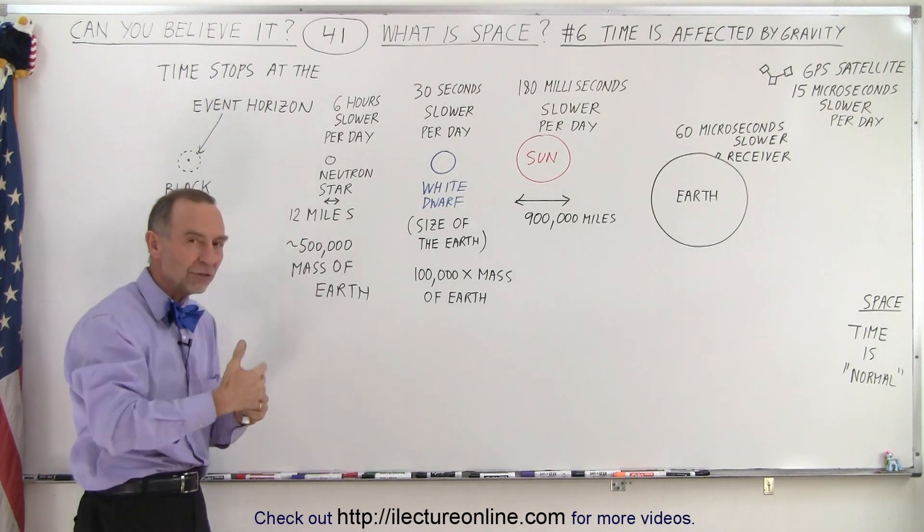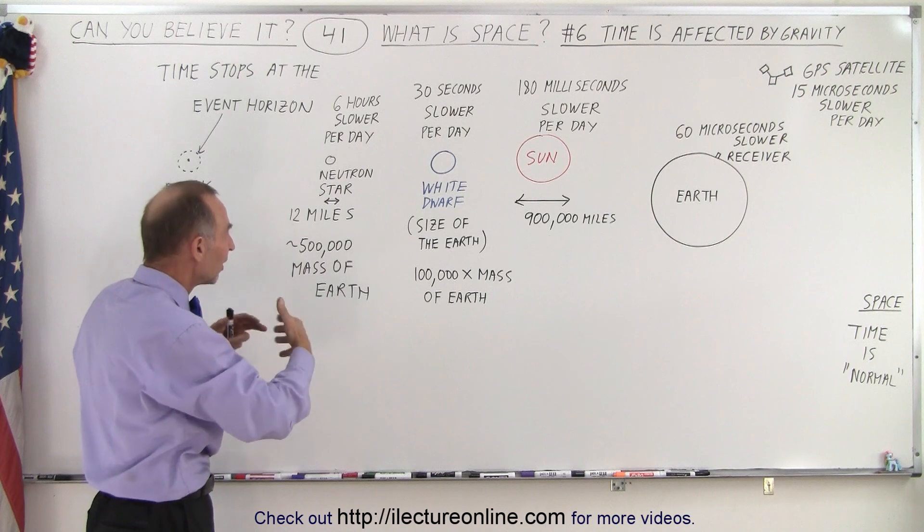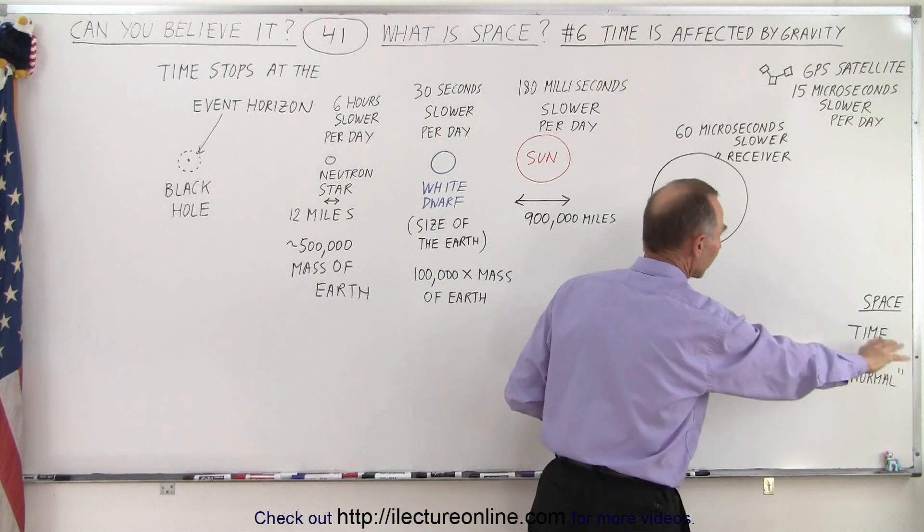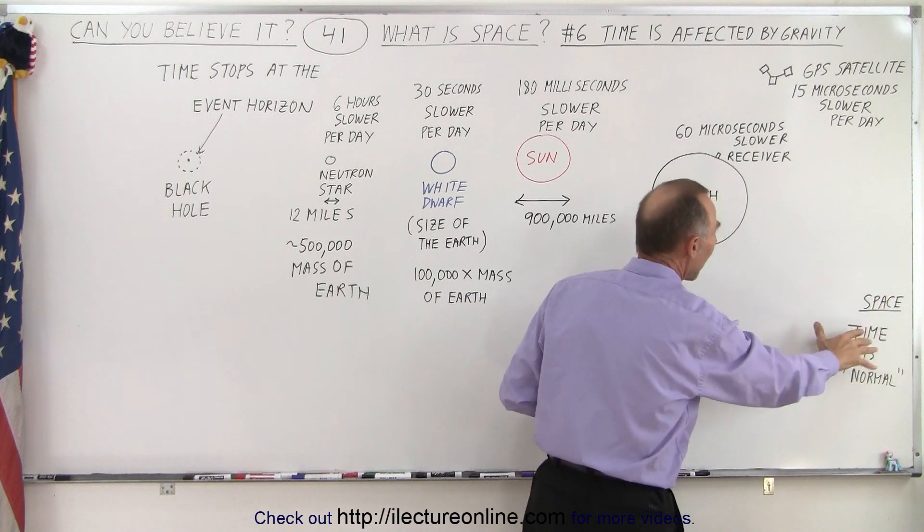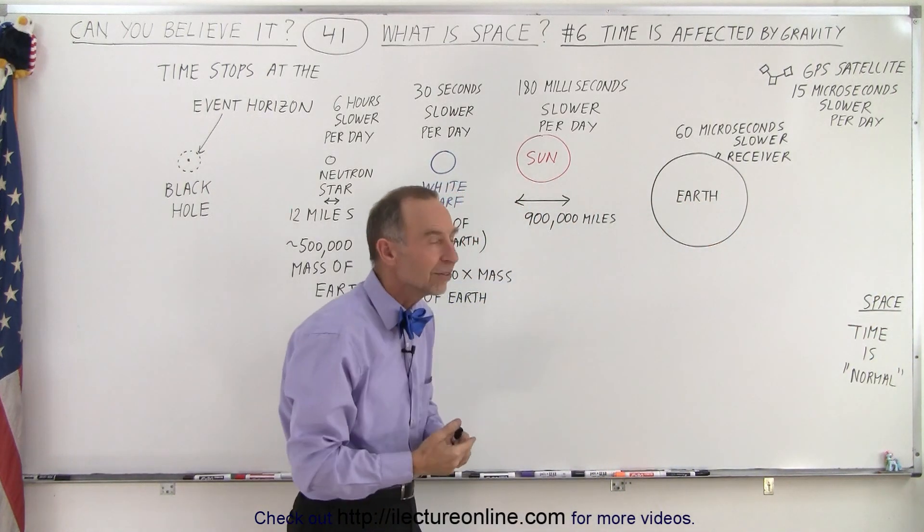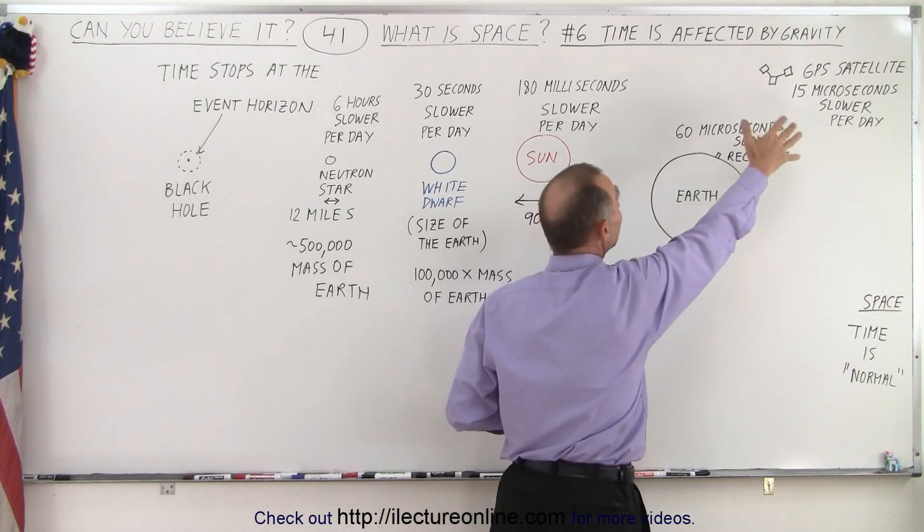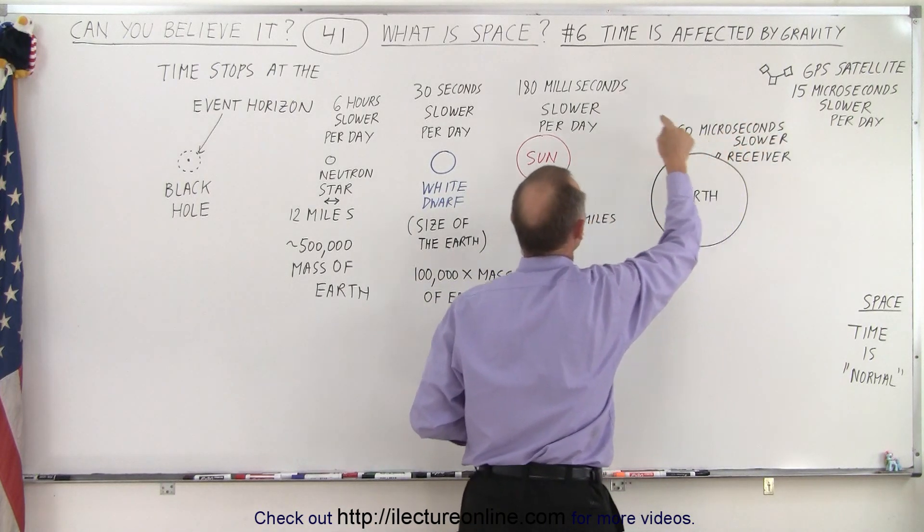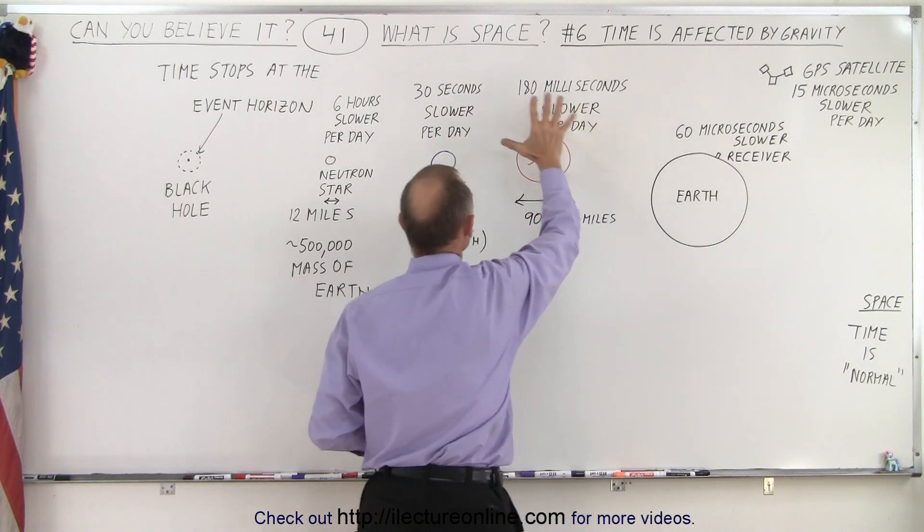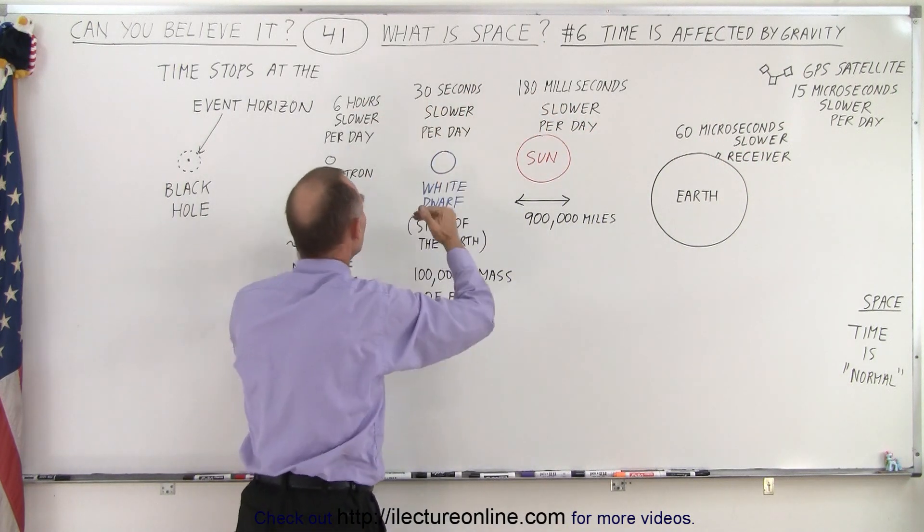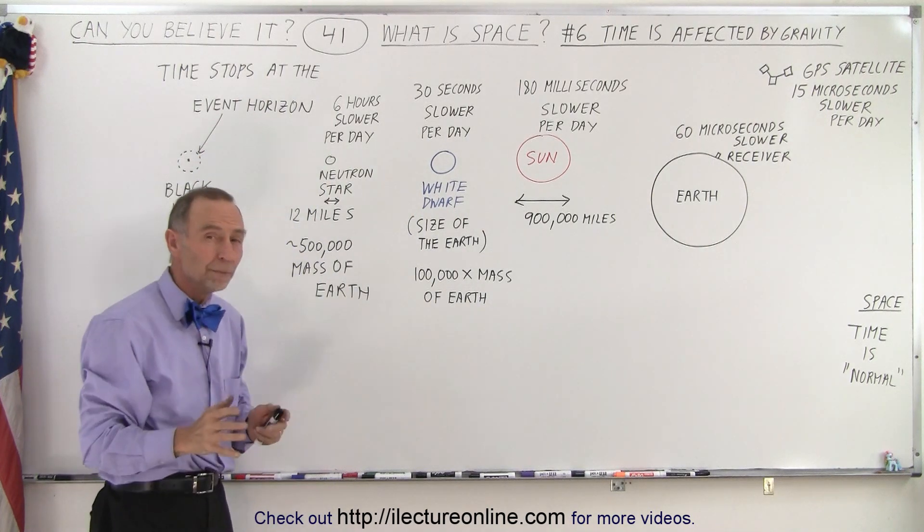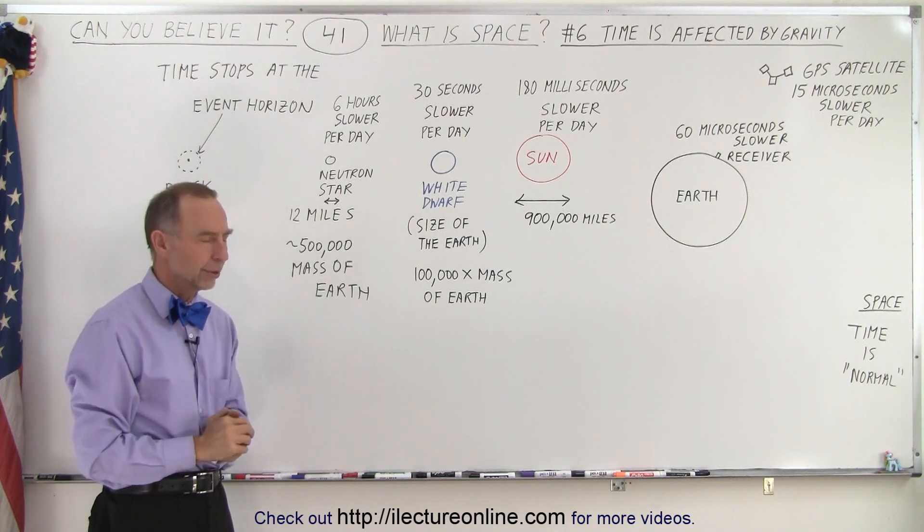So time progresses through space differently depending upon where you are. If you're out in space far away from any planets or stars or anything like that, time just continues at the normal pace. Anytime you begin to be in the influence of a gravitational field, time will begin to run slower. The stronger the gravitational field, the slower the time. And eventually, when you get to the event horizon of a black hole, time will simply stop moving forward.